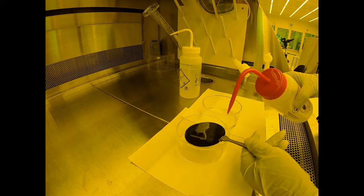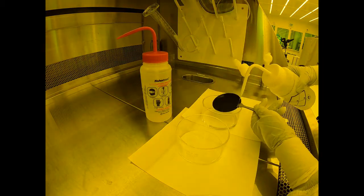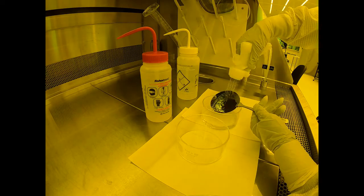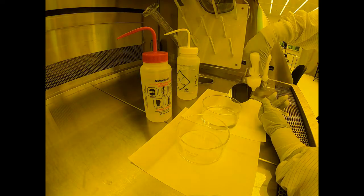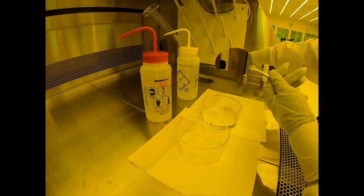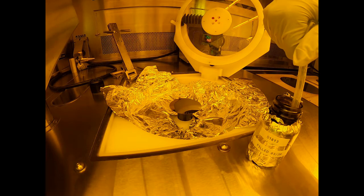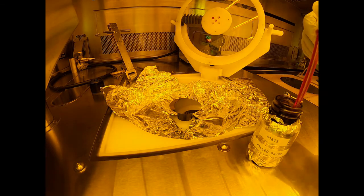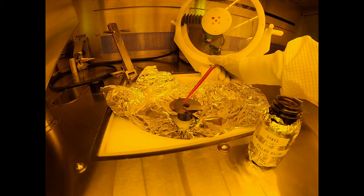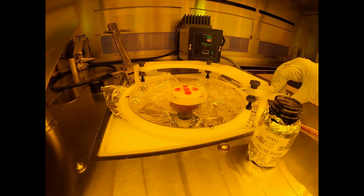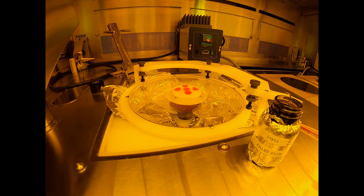First, we clean the substrate in a solvent bath of acetone and then alcohol and rinse in water. Next, the sample is placed inside the spin coater and the photoresist is pipetted onto the substrate. The spin velocity and acceleration can be adjusted using the human-machine interface. Once the appropriate settings are chosen, the sample begins to spin.